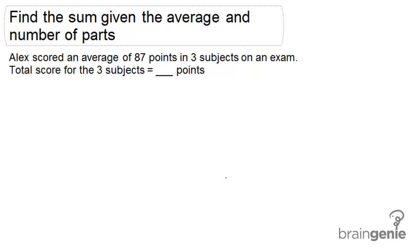Find the sum given the average and number of parts. Alex scored an average of 87 points in three subjects on an exam. The total score for the three subjects equals blank points.